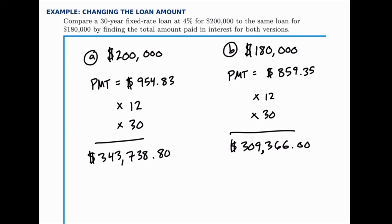So in the first loan, the principal was $200,000, so we'll subtract that. On the second loan, the principal was $180,000, so we'll subtract that there.